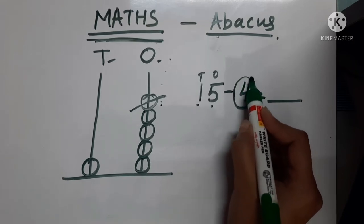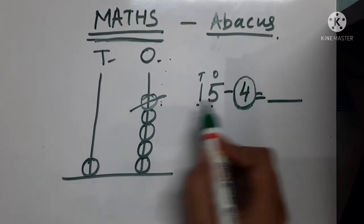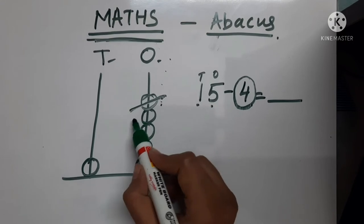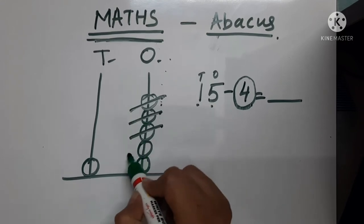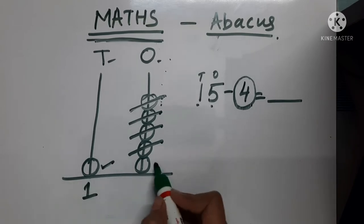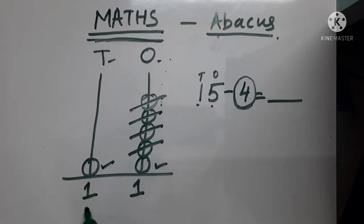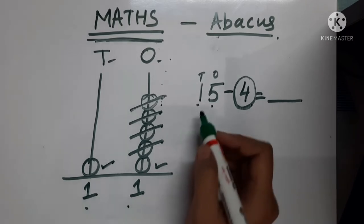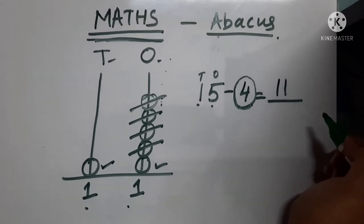So, how many beads should we remove? We have to remove 4 beads. So, let us cut. 1, 2, 3, 4. So, how many beads are left? 1 here and 1 here. So, it makes 1, 1, 11. So, 15 minus 4 becomes 11.